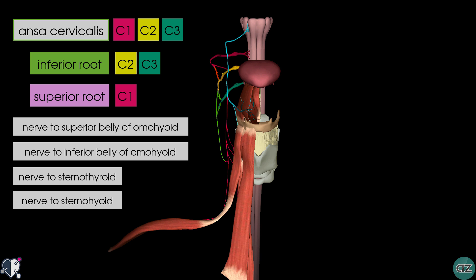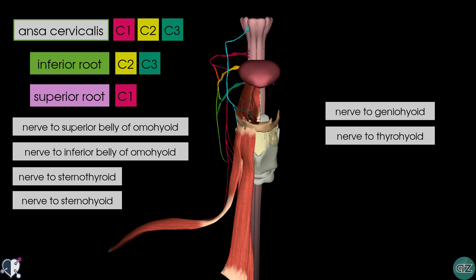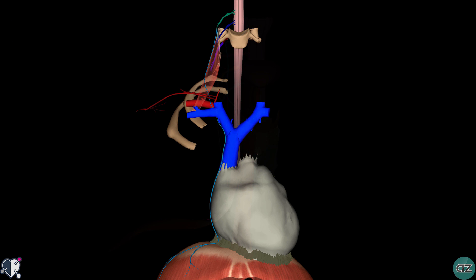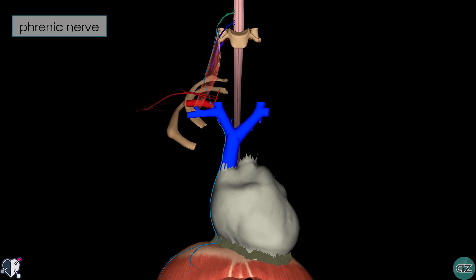There are some additional muscular branches worth mentioning. Two nerves split after travelling with the hypoglossal nerve — these arise from the C1 nerve root and supply the geniohyoid and the thyrohyoid muscle. Now the other major muscular branch of the cervical plexus is the phrenic nerve.